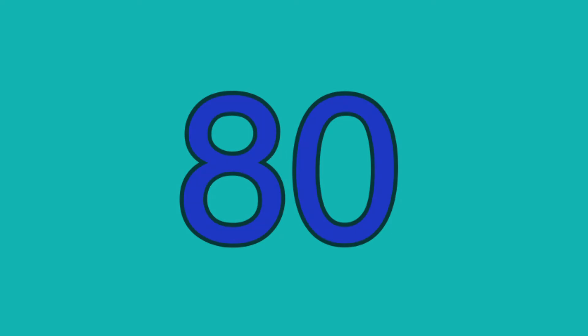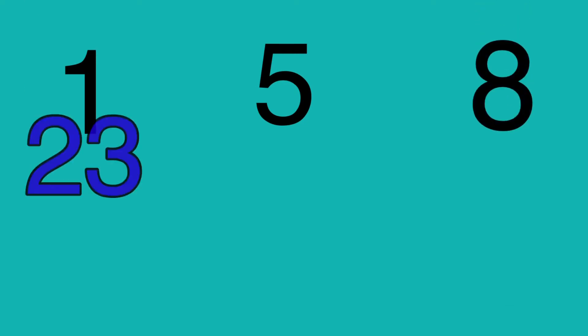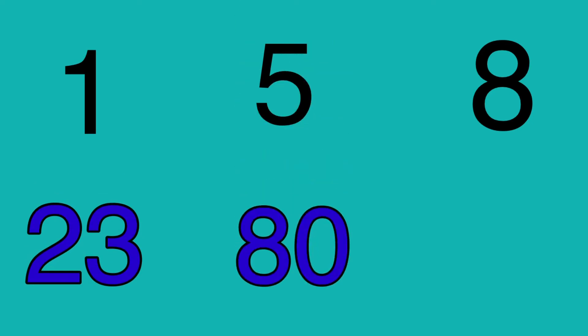When you see numbers, did you notice that some of them are one-digit numbers, while some are two-digit numbers? Number 1, number 5, and number 8 are examples of one-digit numbers. Number 23, 80, and 99 are examples of two-digit numbers.